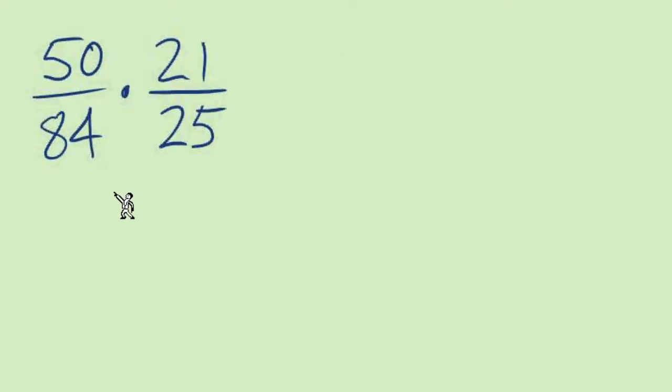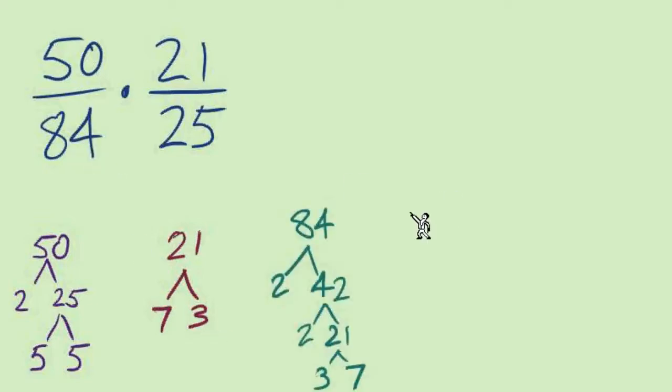We'll start with a numerical example just to talk about what our approach is for these problems. We don't want to just go ahead and multiply straight across. What we're actually doing is working on factoring. So with this problem to factor I would think about these factor trees, so we're gonna go all the way down to prime factors. From the 50 we can go down and find 2, 5, 5. The 21 has prime factors 7 and 3. The 84 is a fun one, it's 2, 2, 3, 7. And the last, the 25, is 5 times 5.